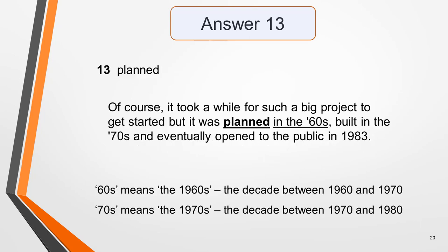Answer 13 is 'planned.' Here's the sentence: 'Of course it took a while for such a big project to get started, but it was planned in the 60s, built in the 70s, and eventually opened to the public in 1983.' The challenge with this answer is knowing that 'the 60s' means the 1960s — that is, the decade between 1960 and 1970. I cover vocabulary related to dates in the lesson on problematic language that I mentioned earlier.